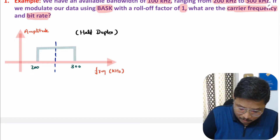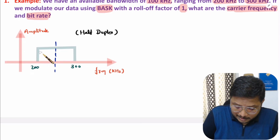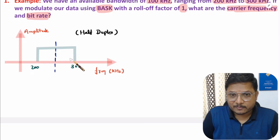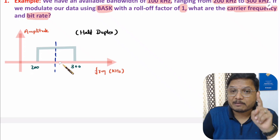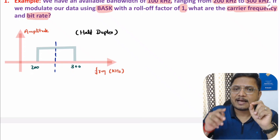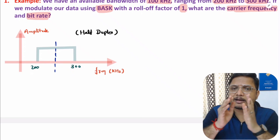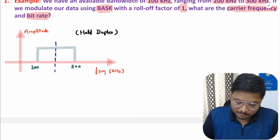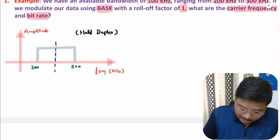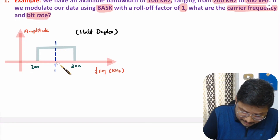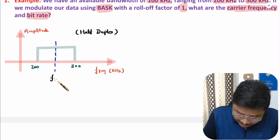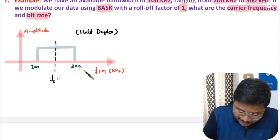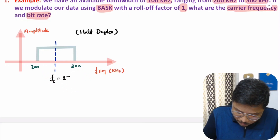So if you have a bandwidth of 100 kilohertz, then carrier frequency will be at the center. The reason is at a time the complete bandwidth is utilized by one device. So here carrier frequency will be at center: that will be 300 plus 200 divided by 2, which means that will be 250 kilohertz.